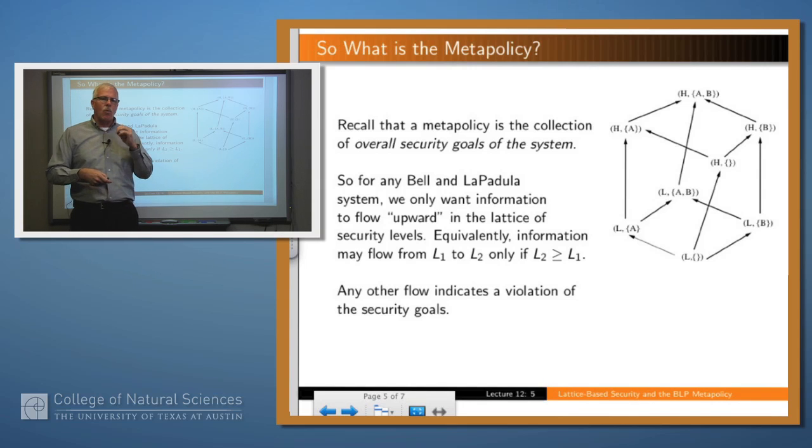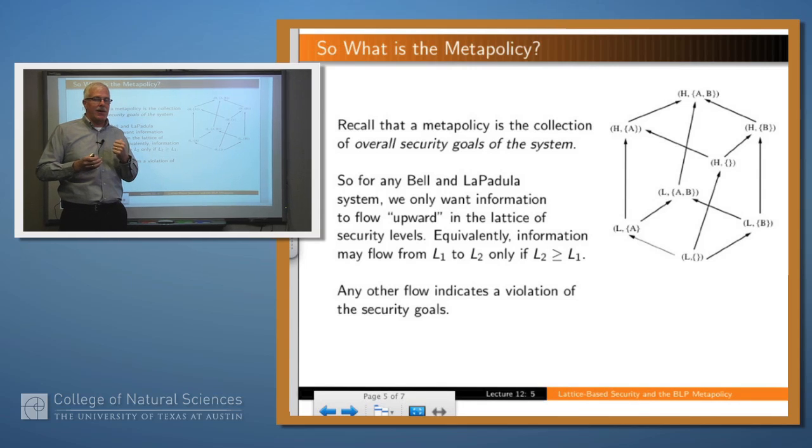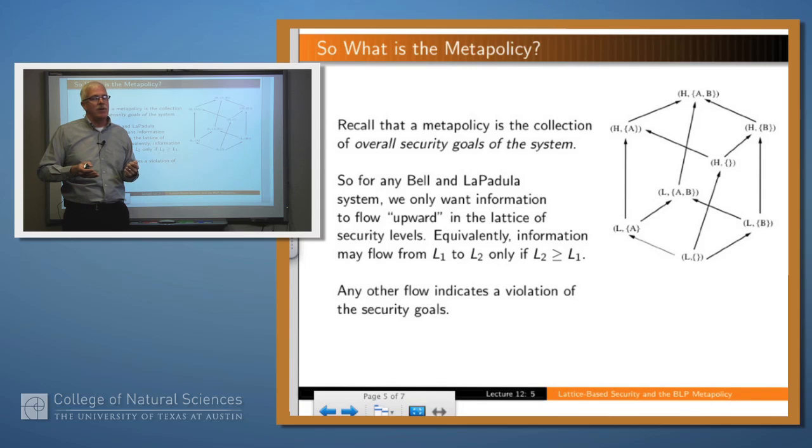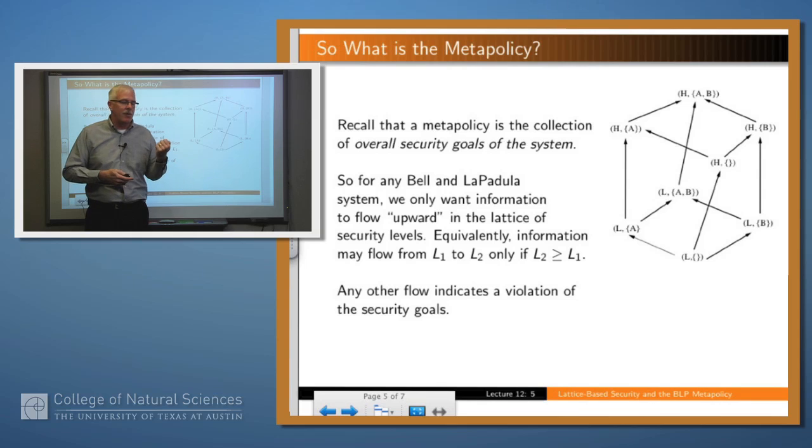So what does that say then that we're really trying to accomplish in Bell and LaPadula? Remember, what we're really trying to accomplish, we call the meta-policy of the system. So what is the meta-policy of Bell and LaPadula? Well, you can think of it in terms of this lattice of labels. It should only be the case in a Bell and LaPadula system that information flows upward in the lattice of labels. And if information flows in any other way than would be allowed by a path through this lattice of labels, then we know that something has gone wrong and that the rules that we've imposed are not adequate to satisfy or to implement the meta-policy.